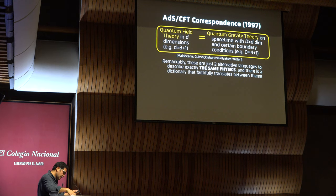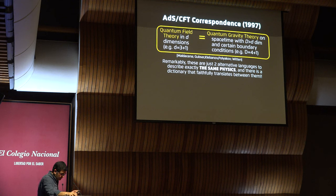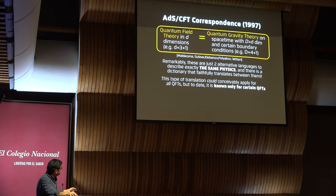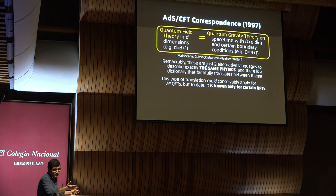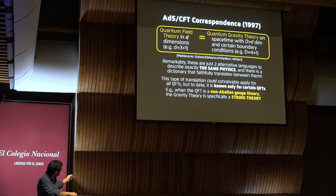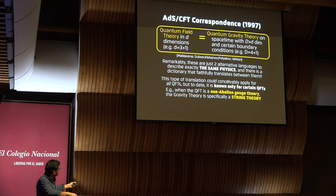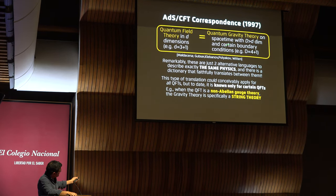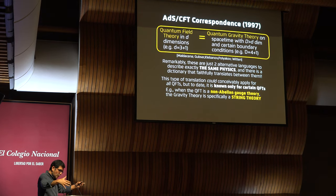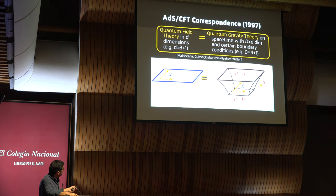Initially, one had a very limited number of examples of this correspondence, but over the years more and more examples have been understood in quite large detail. As far as we know, this type of translation could apply for all quantum field theories, but today we only have full quantitative control for certain classes. An interesting known case is when the quantum field theory happens to be a non-Abelian gauge theory — of great interest to us — and in that case the quantum gravity theory on the other side is string theory.